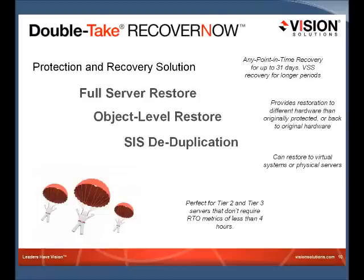With the DoubleTake Recover Now product, you're protecting Tier 2 and Tier 3 servers with higher RTO times in the 4 to 6-hour range. Recover Now offers some features not available with the Availability product, such as object-level restore, but it does not have a failover monitor. When a source fails, you use the Recover Now console to begin the recovery process — which is why RTO times are longer. Both products still use the DoubleTake Replication Engine.